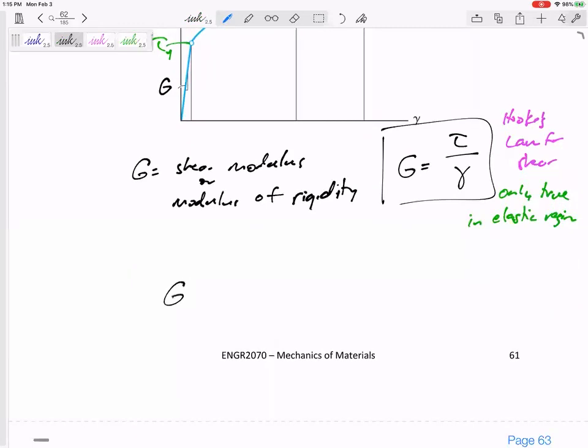Since you don't have a formula sheet, memorize this one. Okay. G is related to E. All right. So G, the shear modulus is related to E, the elastic modulus.